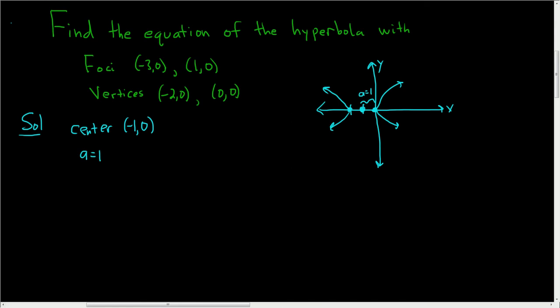Now we're also told that the foci are (-3, 0) and (1, 0). So here's the first foci and here's the second foci.